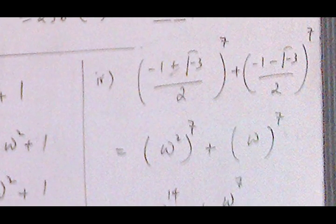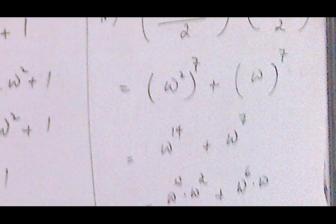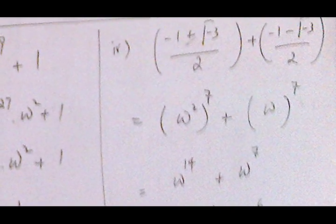In this question one value is ω² and the other is ω, both raised to power 7, giving ω¹⁴ and ω⁷. We convert ω¹⁴ = ω¹² · ω² and ω⁷ = ω⁶ · ω. Since ω¹² is a multiple of 3 it equals 1, and ω⁶ also equals 1.